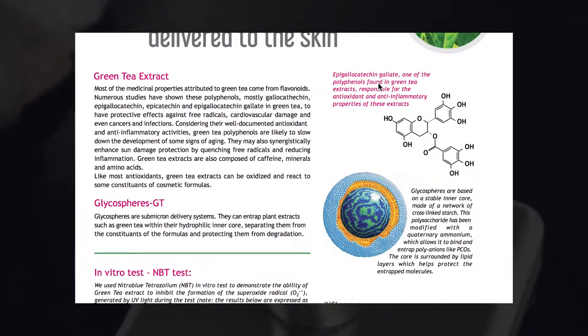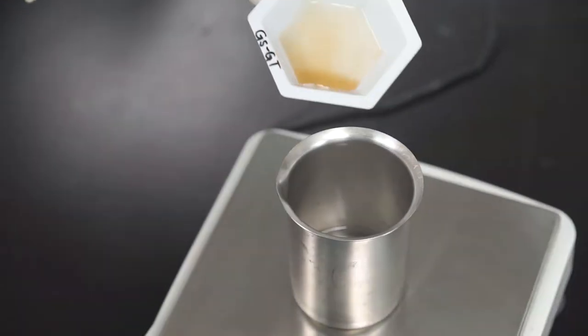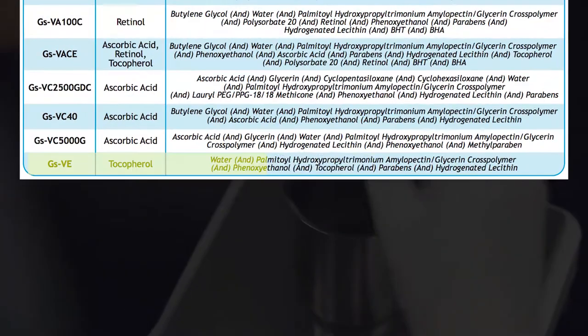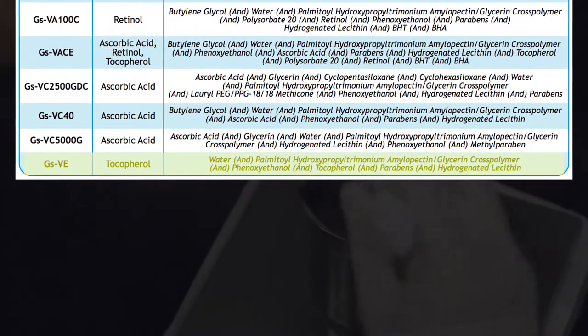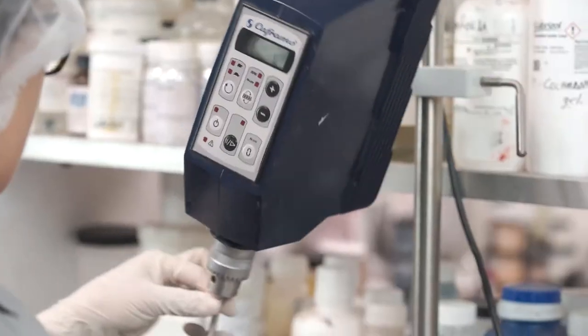GSGT contains green tea polyphenols. Many studies have shown this antioxidant protects against free radicals. GSVE contains tocopherol or vitamin E which is also known to protect against free radicals along with numerous other well-known skin care benefits.